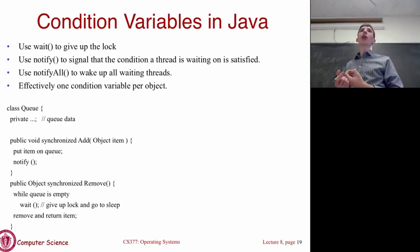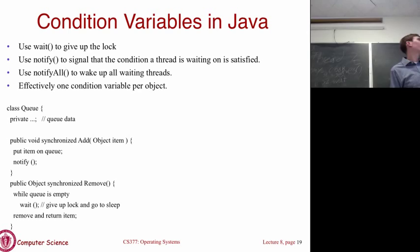Since every Java object inherits from the Object class, and wait, notify, and notifyAll are defined there, you can use any class itself as the condition variable. If you want multiple condition variables, you add additional private objects and call their wait and notify methods.